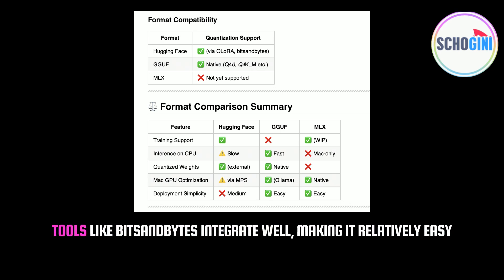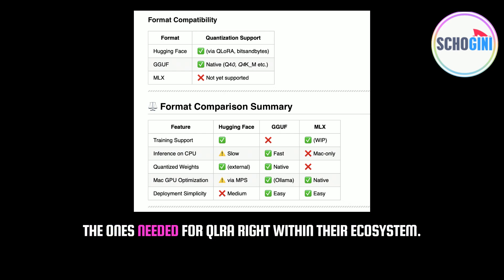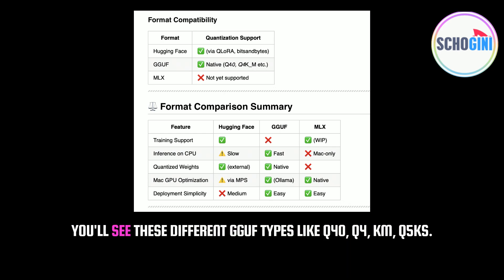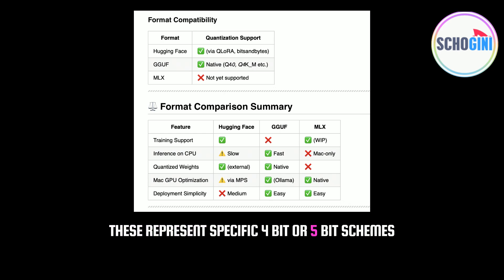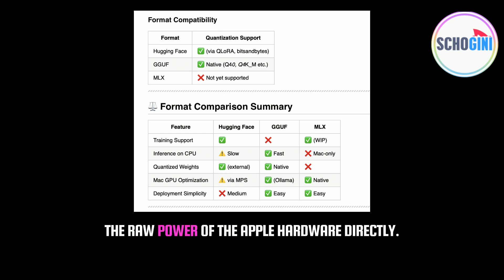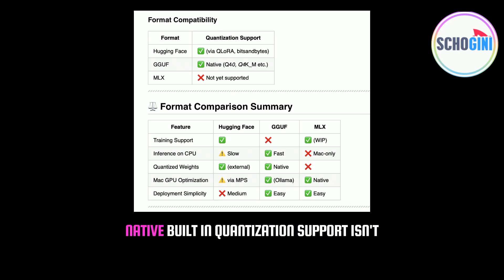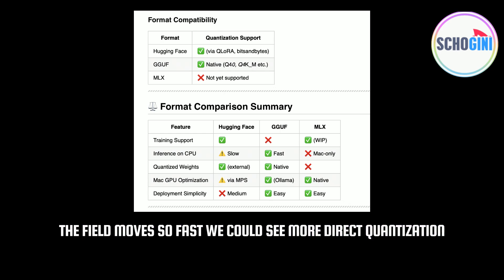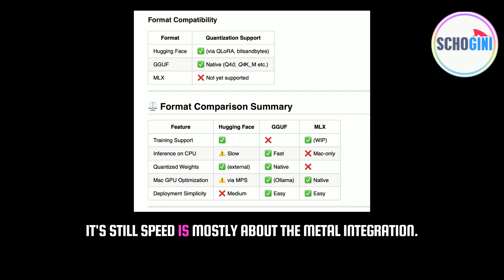How do our three formats handle quantization? Hugging Face has great library support — tools like bitsandbytes integrate well, making it relatively easy to apply various quantization methods, including the ones needed for QLoRA. GGUF, as we said, is built for quantization — it has native support baked in. You'll see GGUF types like Q4_0, Q4_K_M, Q5_K_S, representing specific 4-bit or 5-bit schemes with slightly different trade-offs. MLX's main strength right now is leveraging the raw power of Apple hardware directly — native built-in quantization support isn't quite as front and center compared to GGUF, as its performance comes more from hardware optimization.